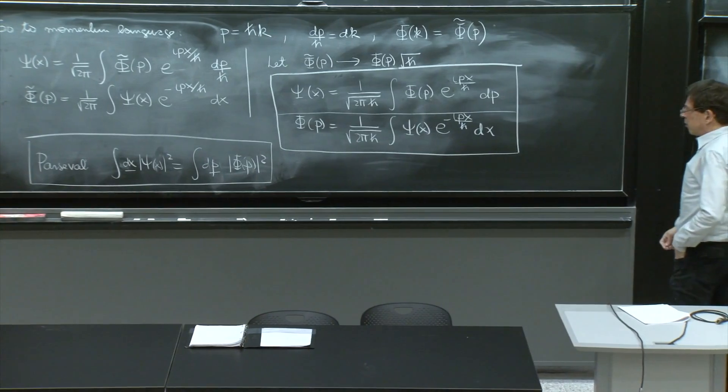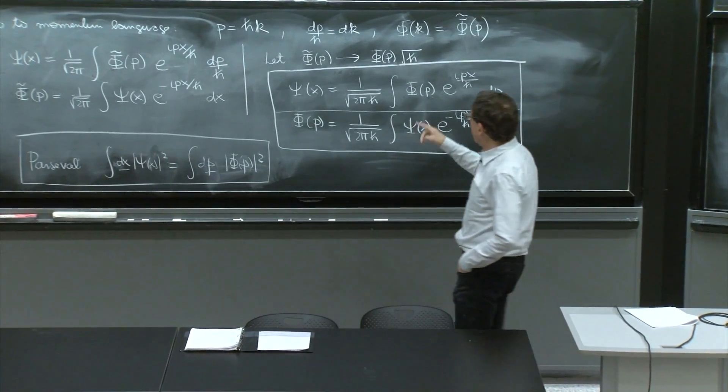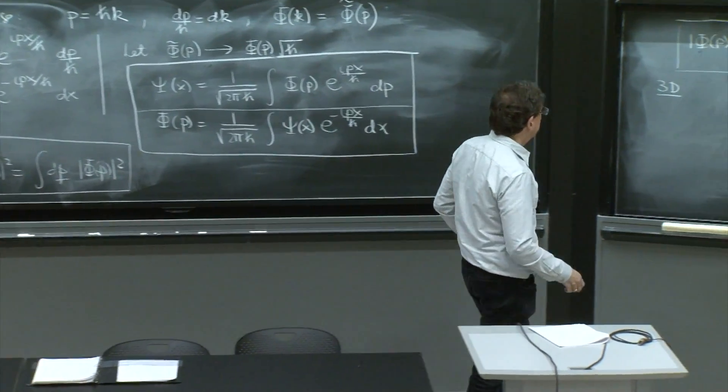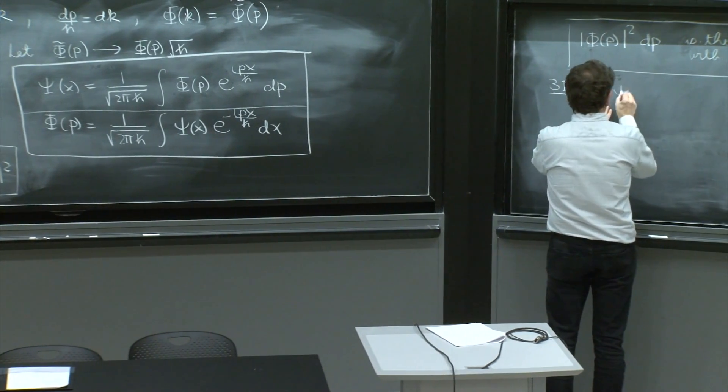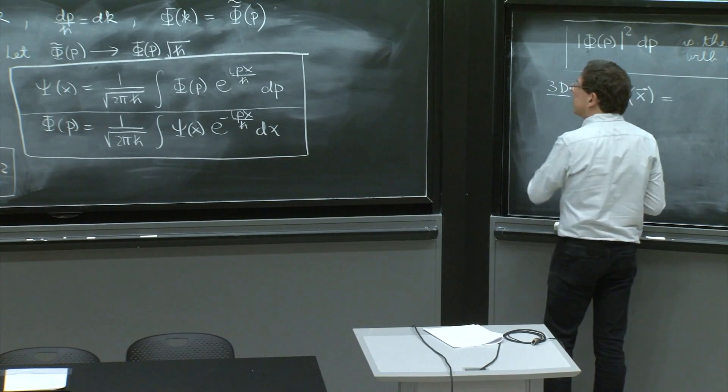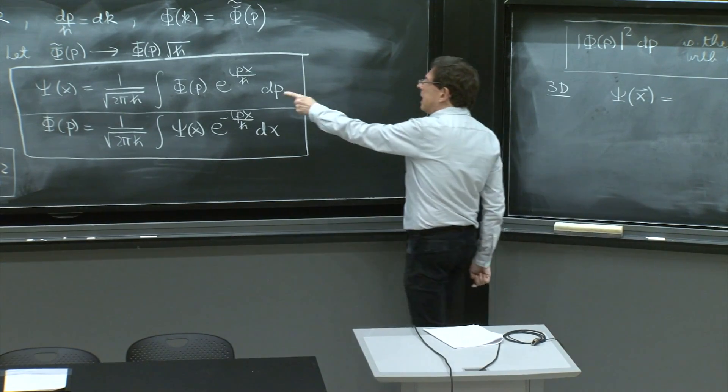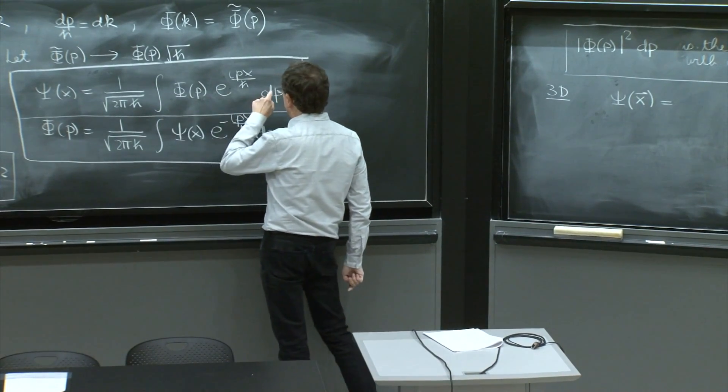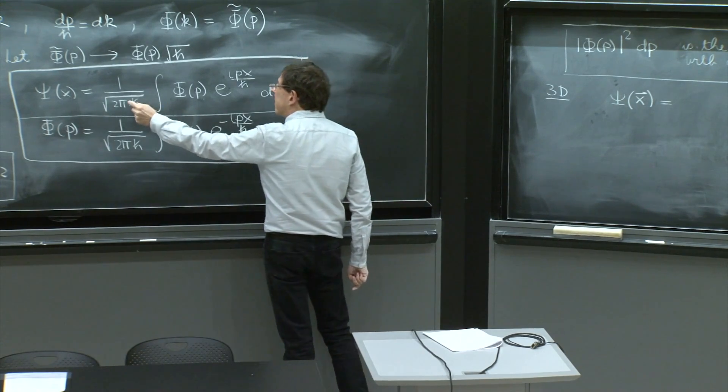3D version of Fourier transform. So this is what we want to rewrite. So what would it be? It's psi of the vector x. Since you're going to have three integrals, because you're going to integrate over three components of momenta,